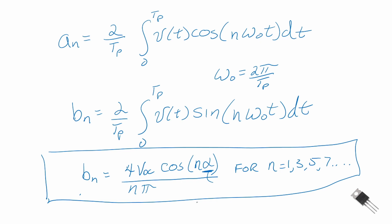You can see that if alpha equals 0 degrees we have a symmetrical square wave, with coefficients 4·VDC over n·π. If you look up a Fourier series table you'll often see this as the square wave result. This is probably an equation you want to write down in your notes.